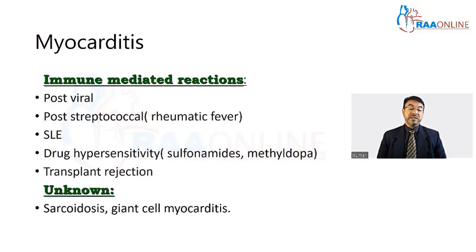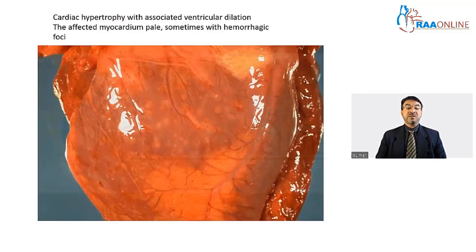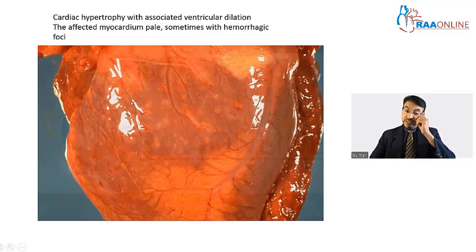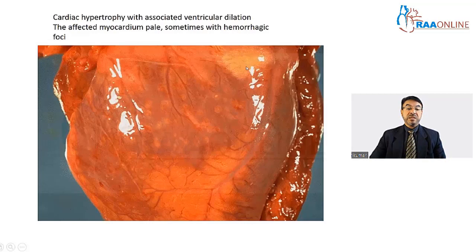Grossly, the heart in myocarditis appears enlarged with cardiac hypertrophy. On cut section there is ventricular dilation — in fact this is one of the causes of dilated cardiomyopathy. The myocardium becomes pale throughout, and sometimes you can see small areas of hemorrhage within the muscle, appearing as small darker areas.